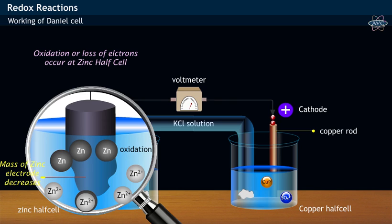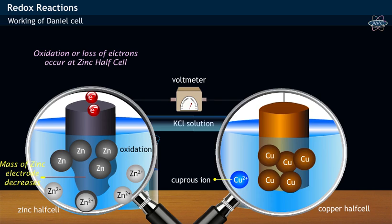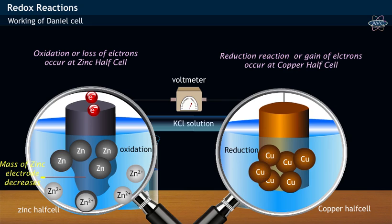Here, in this half cell, the cupric ion shown as Cu2+ accepts two electrons received from the zinc anode and thereby gets converted into copper Cu. That is, reduction reaction occurs at copper electrode.